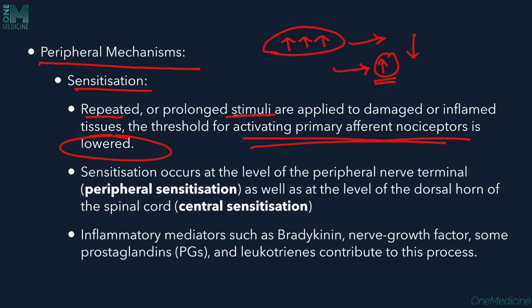Sensitization occurs at the level of the peripheral nerve terminal as well as at the level of the dorsal horn or spinal cord, the latter called central sensitization. Inflammatory mediators such as bradykinin, nerve growth factors, prostaglandins, and leukotrienes contribute to this process.